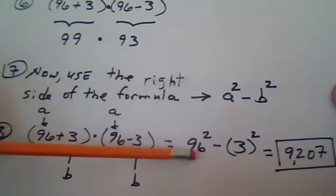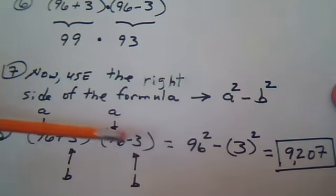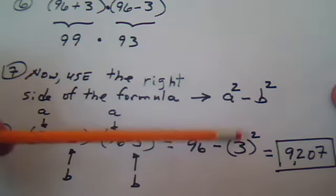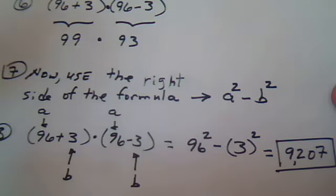So the a is the 96, so square it, minus the b is the 3, so square it, and then subtract it, and you get 9,207.